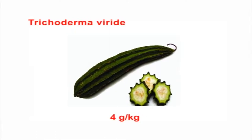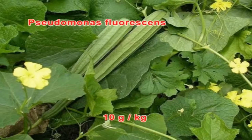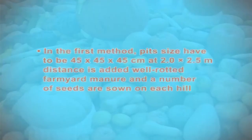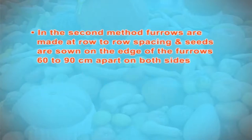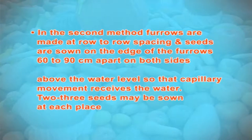In ribbed gourd, seeds are treated with Trichoderma viride at 4 g/kg or Pseudomonas fluorescens at 10 g/kg before sowing. After seed treatment, sowing is taken up. In cucurbits there are two methods of planting. In the first method, pits of size 45 × 45 × 45 cm at a distance of 2 × 2.5 meters are taken out, added with well-rotted farmyard manure, and 4 to 5 seeds are sown in each hill. In the second method, furrows are made and seeds are sown on the edge of the furrows 60 to 90 cm apart on both sides above water level, with 2 to 3 seeds at each place.